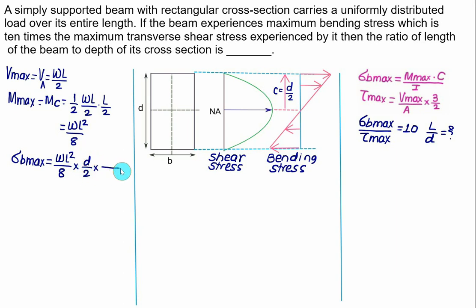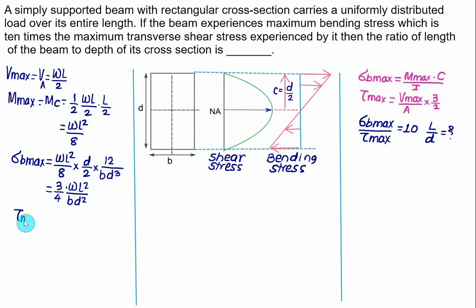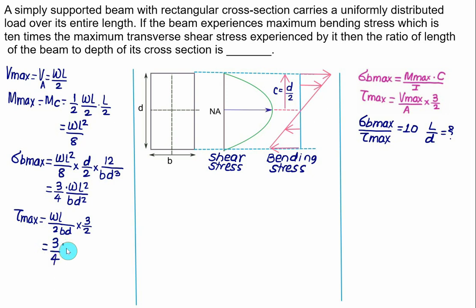Substituting into the bending stress formula: σ_B_max = (WL²/8) × (D/2) / (BD³/12) = (3/4) × W × L² / (BD²). Similarly, τ_max = (WL/2) / (BD) × (3/2) = (3/4) × WL / (BD).